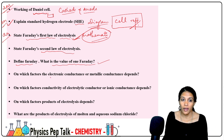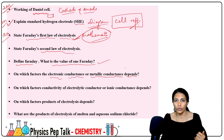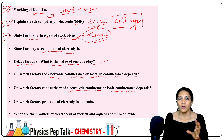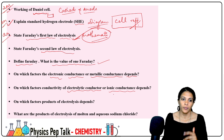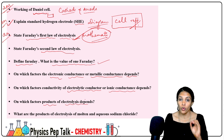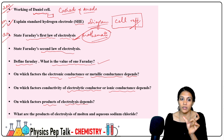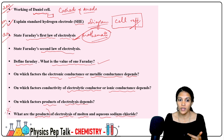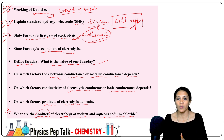On which factors does electronic conductance or metallic conductance depend — this is a 2 marks question with 2 points. Note: do not confuse electronic/metallic conductance with electrolytic or ionic conductance. Next, on which factors do the products of electrolysis depend — this is very important. What are the products of electrolysis of molten and aqueous sodium chloride — very very important.